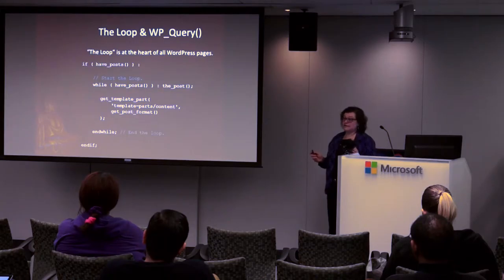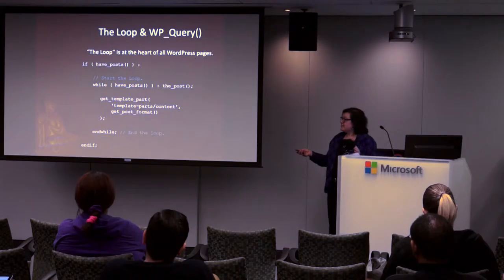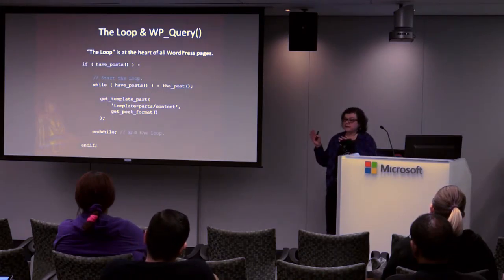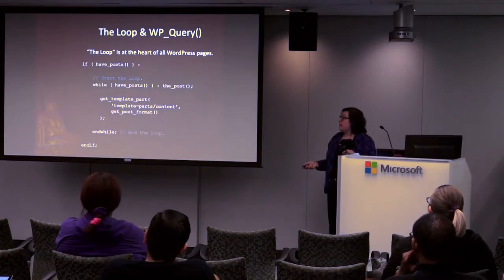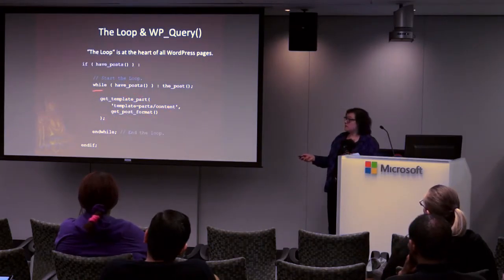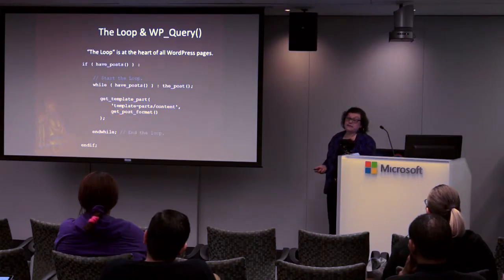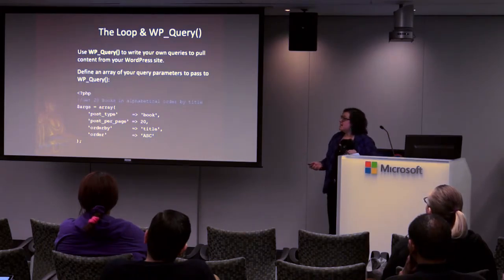The loop — we could do a whole class on this, but you've all seen it. A very basic loop: if have_posts(), while have_posts(), the_post(). The the_post() call is the piece of magic that makes the_title(), the_content(), the_post_thumbnail() all work. In this example we're using get_template_part() looking in a folder called template-parts for a file called content.php, or more specifically content-{post_format}.php. If you want to get more advanced with the loop and write your own templates with more advanced querying, WP_Query has come a really long way.